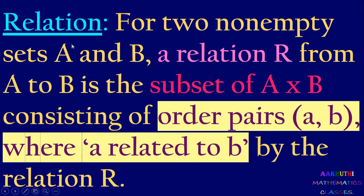Now we state the definition of a relation. For two non-empty sets A and B, relation R from set A to set B is the subset of A cross B consisting of ordered pairs (a, b) where a is related to b by the relation R. So relation is a subset of A cross B which contains ordered pairs (a, b) such that a is related to b by the relation R. The set of all such ordered pairs is called the relation.